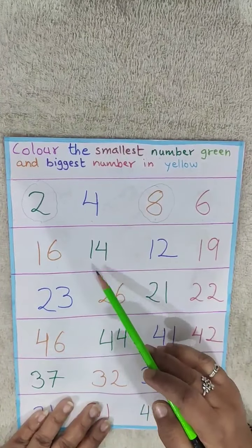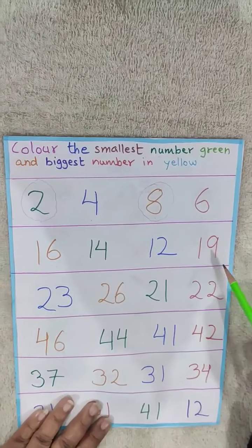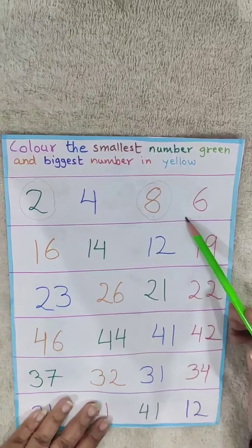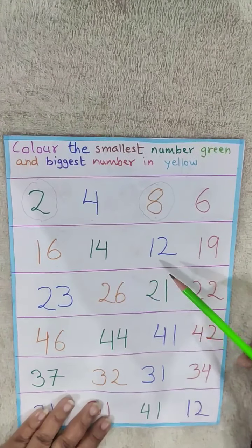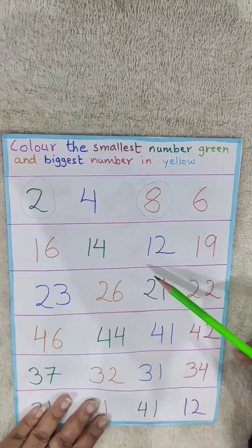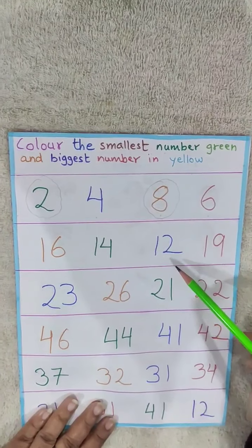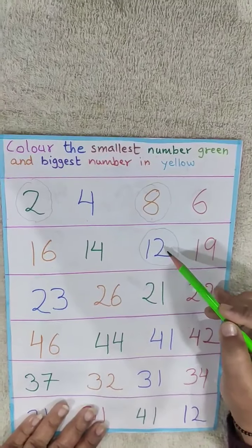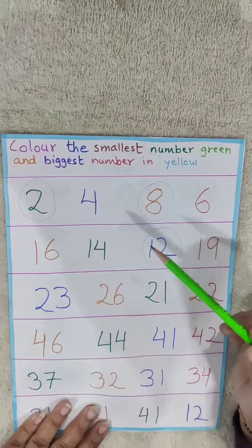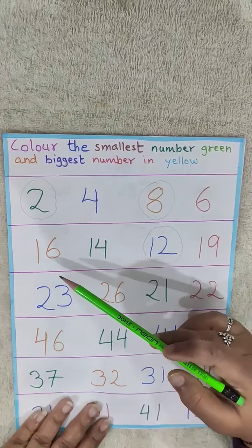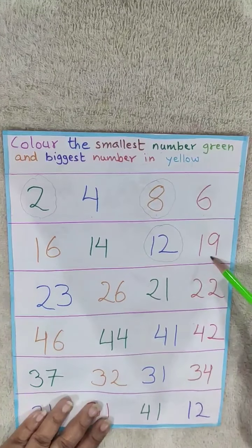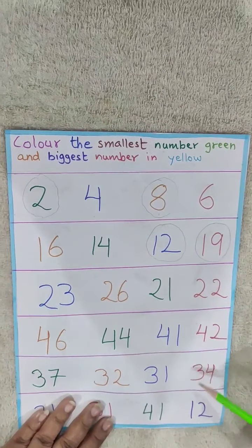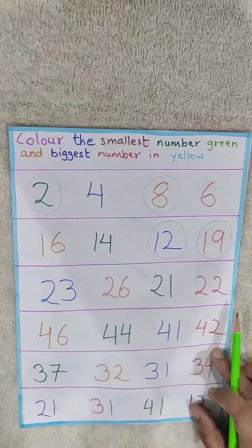Now the second row: 16, 14, 12, and 19. We will do it likewise. Start counting: 1, 2, 3... 12 is the smallest number, so we will circle it and color it green. Then continuing: 13, 14, 15, 16, 17, 18, 19 — 19 is the biggest one, so we will circle it and color it yellow.